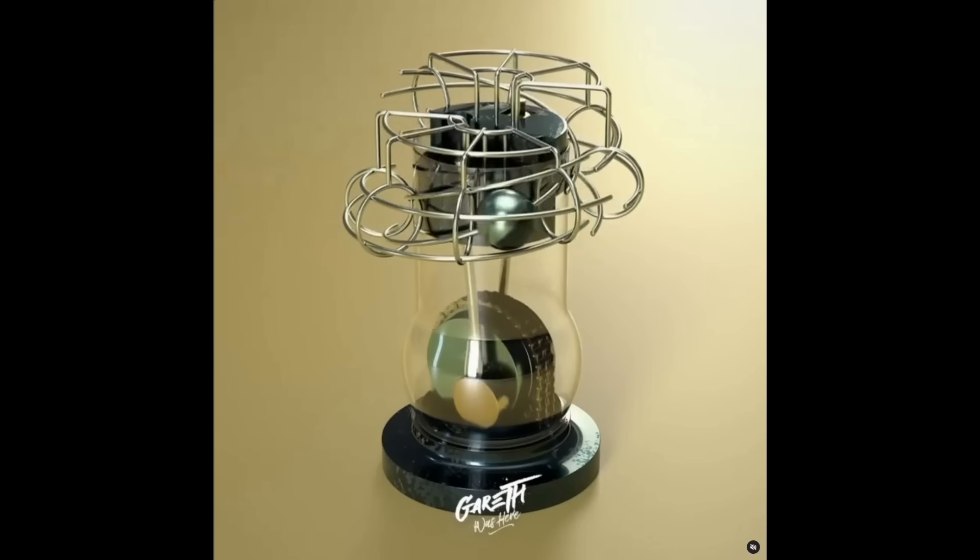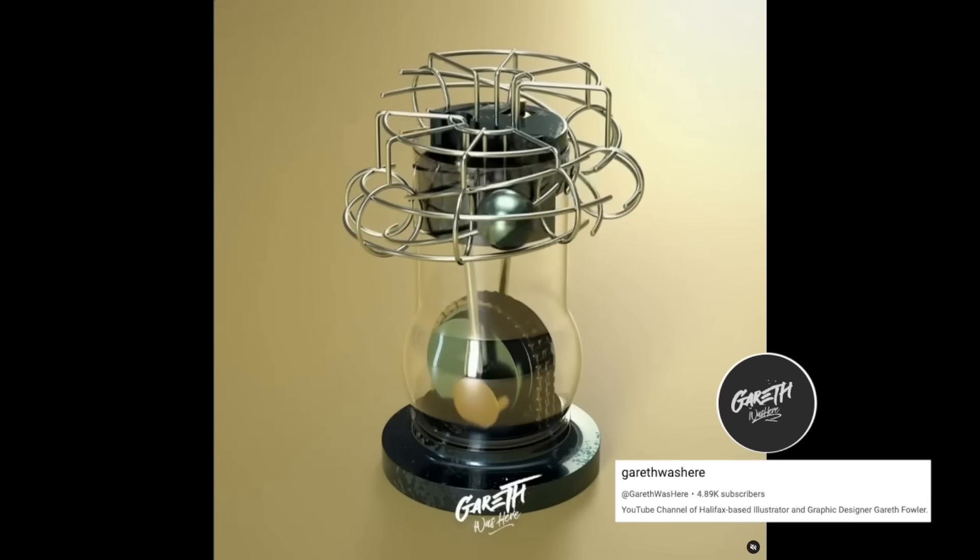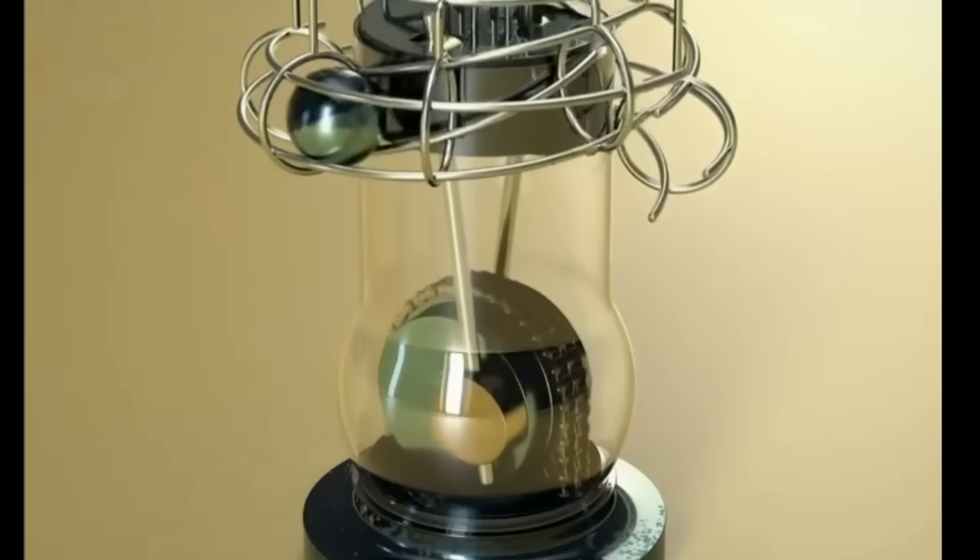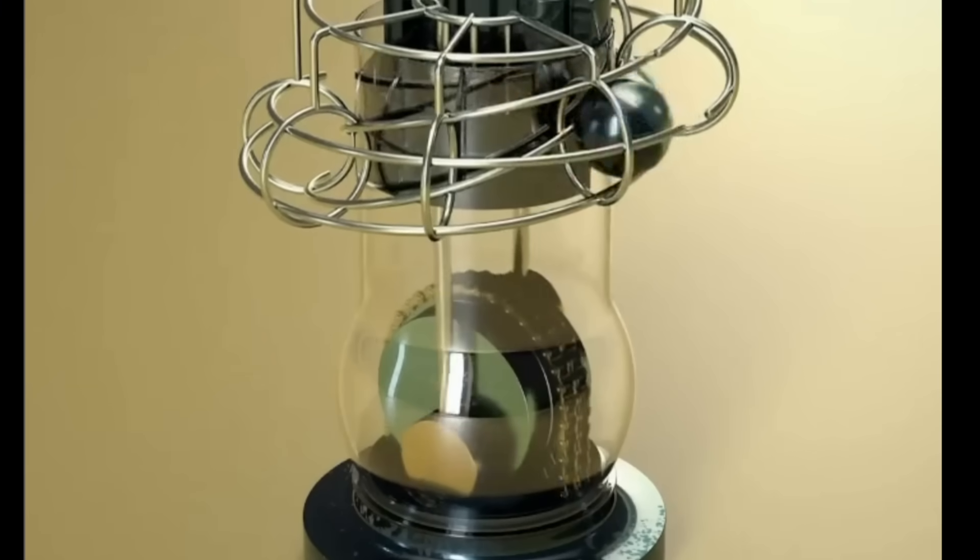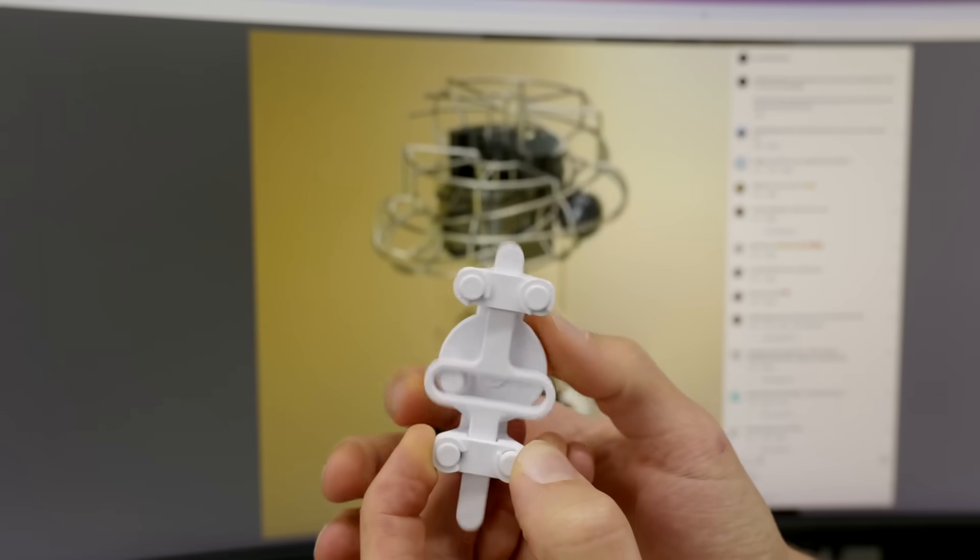And the next mesmerizing machine takes the concept of the rotating balls to the next level. Number 8 on the countdown was inspired by this satisfying animation created by Gareth Was Here. And I wanted to see if it was possible to make this happen with real life physics. In the animation, Gareth used the crank and slider to move the track segments up and down, which would work in real life, but for fun, I was thinking it would be cool to use a scotch yoke instead.